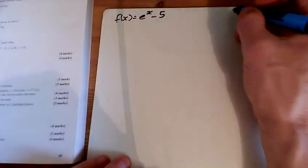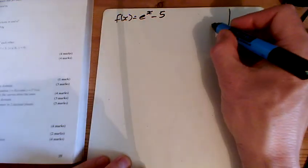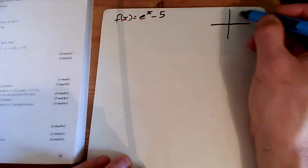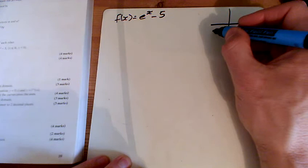Question 11, we've got an e to the x graph. Have a think what this looks like. You know the e to the x graph is the whoosh, like this, and we're translating it 5 down.